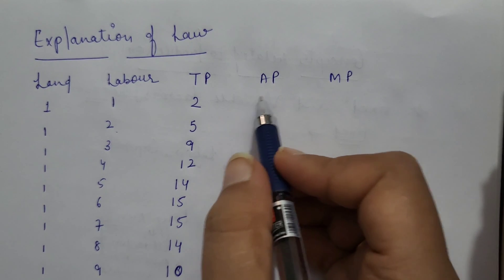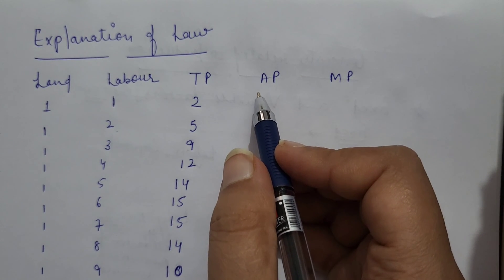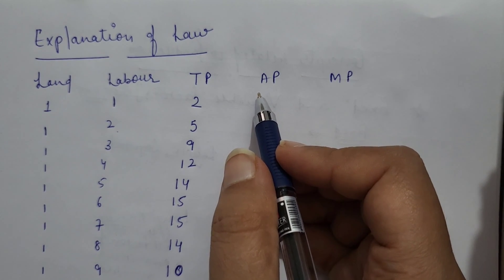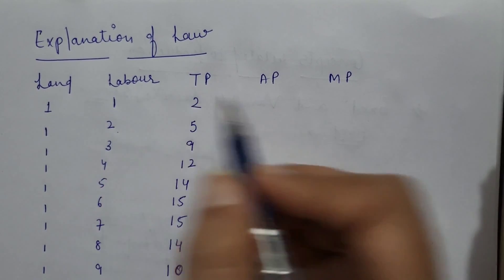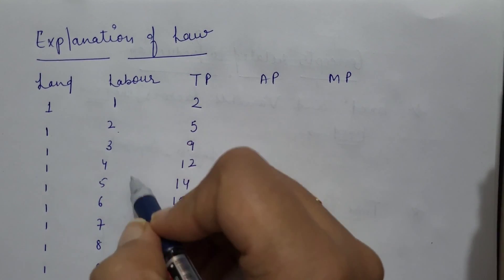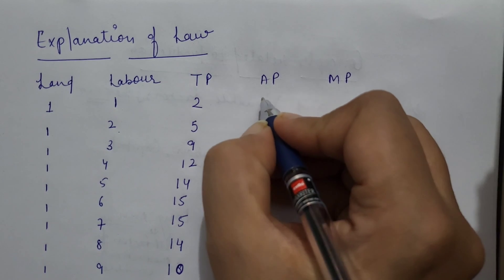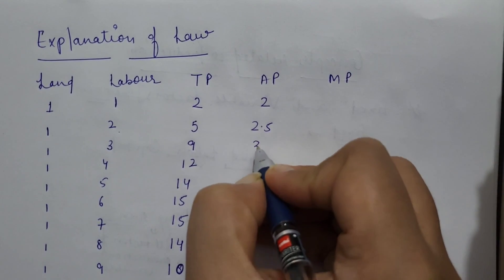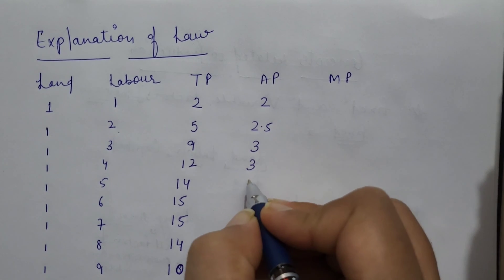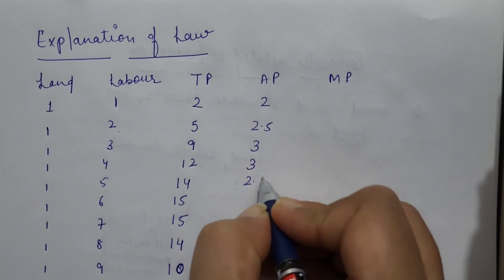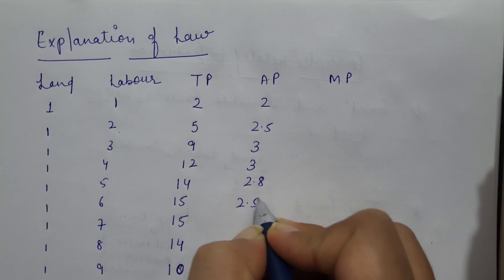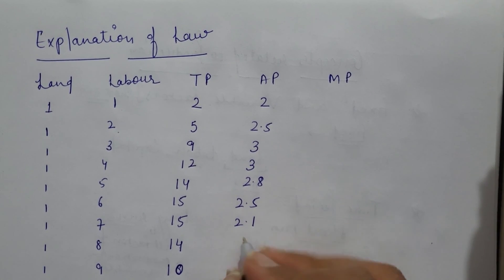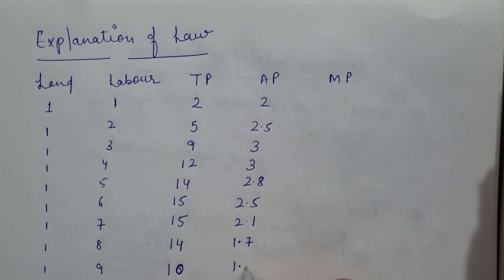Average product can be calculated by dividing the total product by the units of the variable factor. So: 2 divided by 1 is 2; 5 by 2 is 2.5; then 3; again 3; then 2.8; 2.5; 2.1; 1.7; and approximately 1.1.